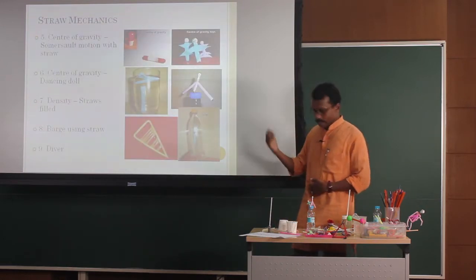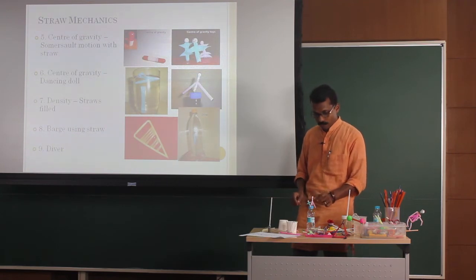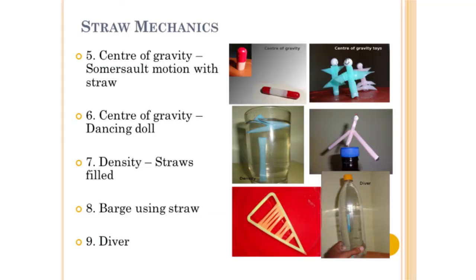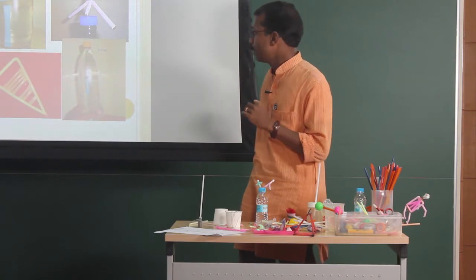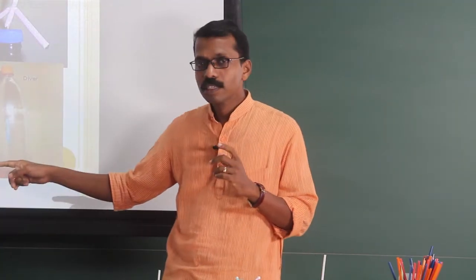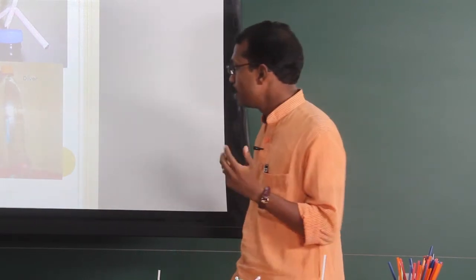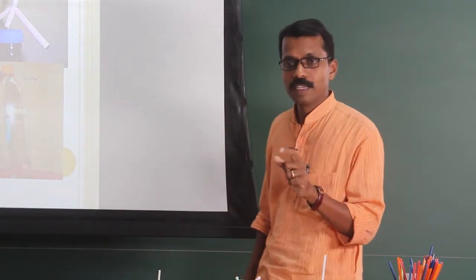The next experiment is center of gravity — there are center of gravity toys, including a dancing man. Then density: different straws filled with different types of liquid float or sink with respect to their density. There is also a barge that floats when density is less, and a diver that goes up and down based on density and pressure.